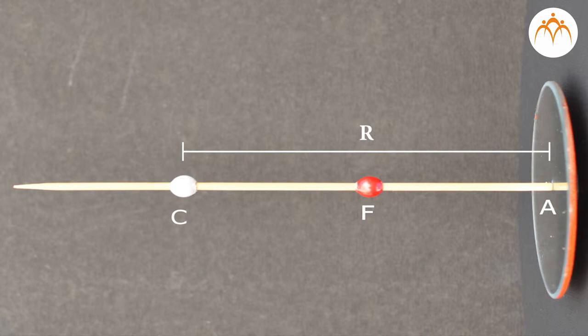The distance from the mirror to the focal point is known as the focal length, represented by the letter F. Since the focal point is the midpoint of the line segment adjoining the vertex and the center of curvature, the focal length would be one half the radius of curvature.